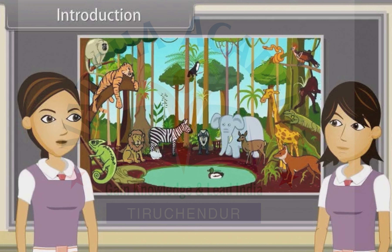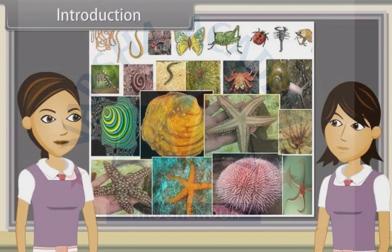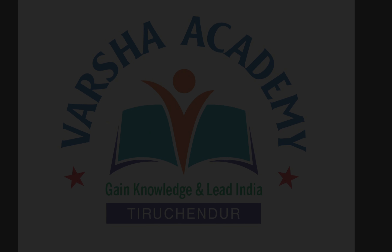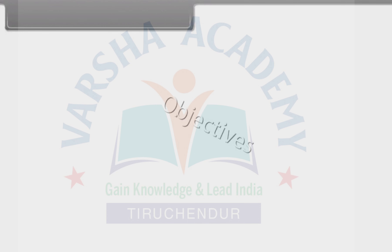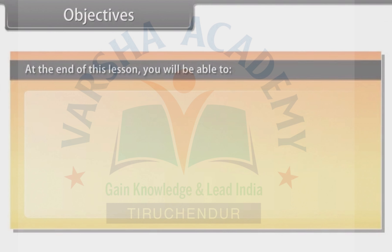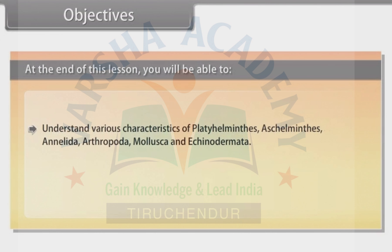Now we are going to discuss characteristics of Platyhelminthes, Aschelminthes, Annelida, Arthropoda, Mollusca and Echinodermata. At the end of this lesson, you will be able to understand various characteristics of Platyhelminthes, Aschelminthes, Annelida, Arthropoda, Mollusca and Echinodermata.